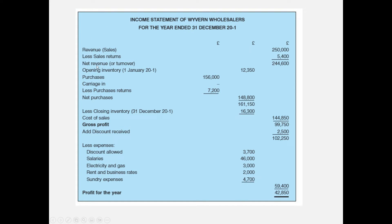Here's the income statement we looked at in Lesson 8 for Wyvern Wholesalers — for the year ended 31st December 2021. The trading section shows sales, cost of sales, and gross profit. We then add discount received, deduct expenses, and arrive at a profit for the year of $42,850. Remember that figure for the statement of financial position.